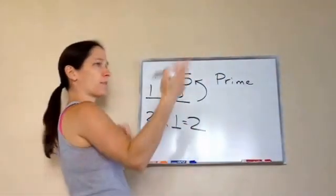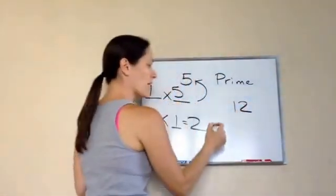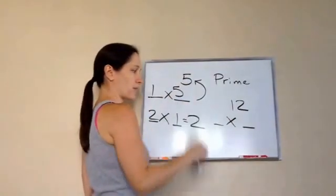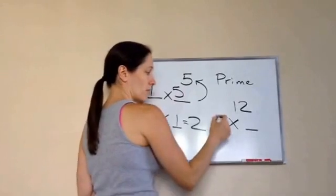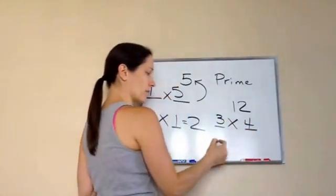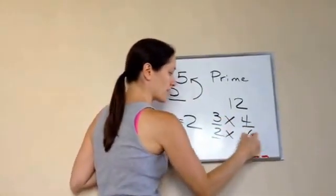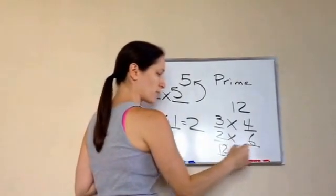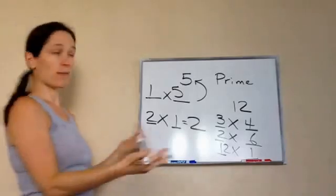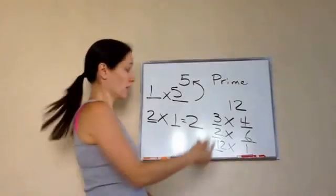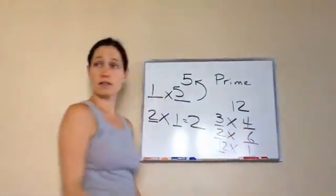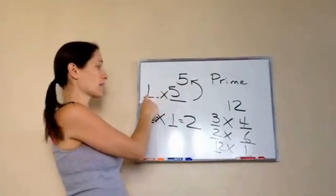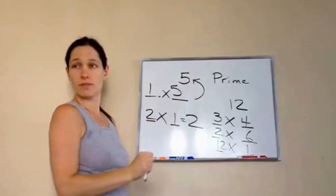For example, let's pick 12. What times what equals 12? Just throw out some stuff. 3 times 4 equals 12. 2 times 6 equals 12. 12 times 1 equals 12. So how many factors does it have? 1, 2, 3, 4, 5, 6. Prime numbers only have 2, and it's always the number 1 and itself. You get it?